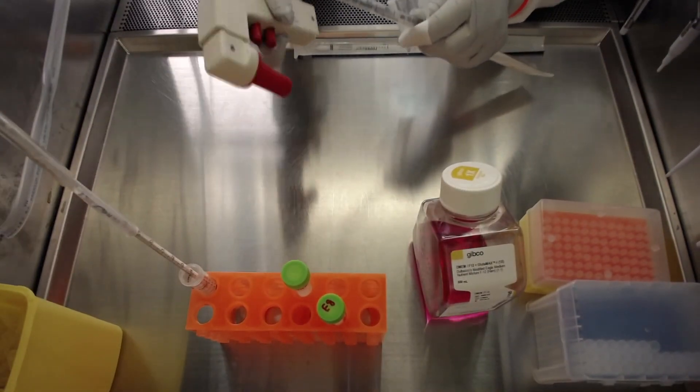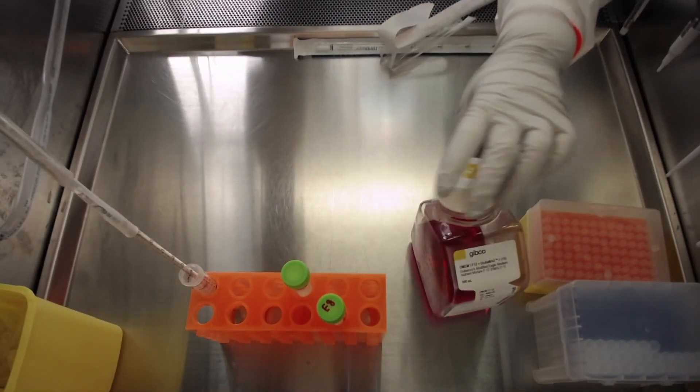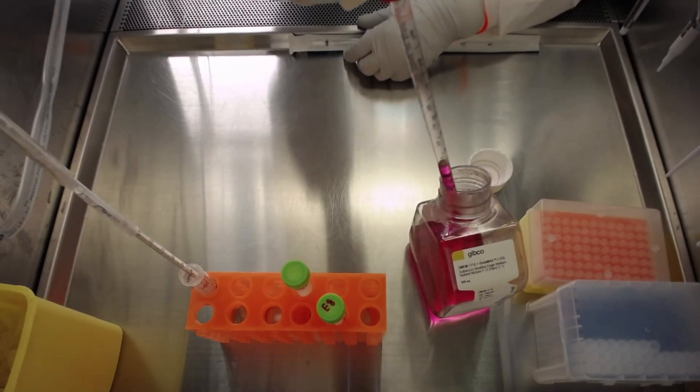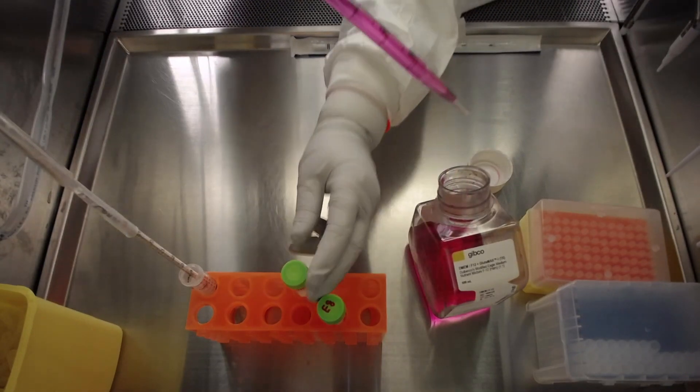Before thawing the cells, make sure all the necessary material is set up inside the biosafety cabinet, and add 9 milliliters of warm DMEM F12 media with anti-anti to a 15 milliliter sterile conical tube.